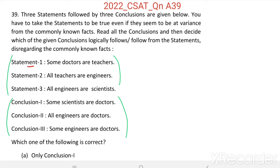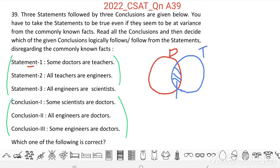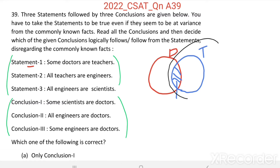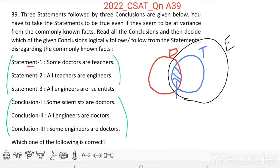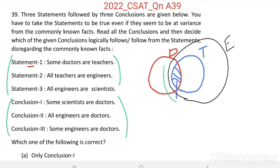For the first statement, some doctors are teachers — suppose this is the circle for doctors and this blue circle for teachers, with a common area showing some doctors are teachers. Second statement: all teachers are engineers, so the teachers circle is inside engineers. Third statement: all engineers are scientists, so engineers is inside scientists.